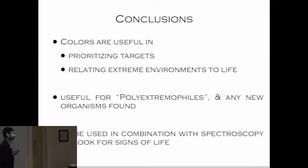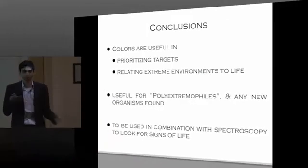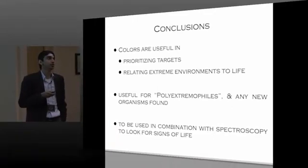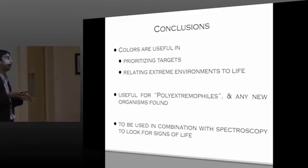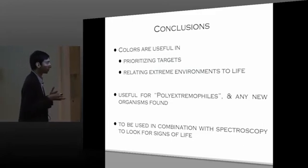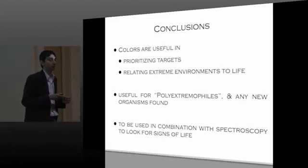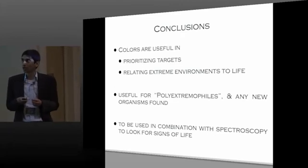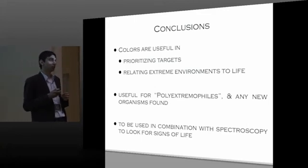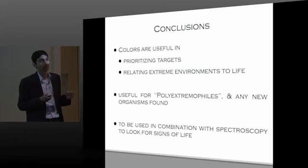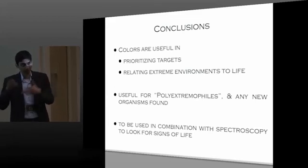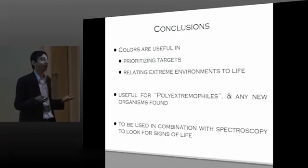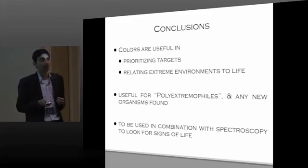And yeah, so basically, colors are useful in prioritizing targets. They help you build a link between environmental conditions and life. They can also be used, although I've used organisms which are thriving in a particular physical or chemical extreme, one can use this for poly extremophiles which can live in multiple environmental extremes or any new organisms found in new niches. The important thing to note here is that this does not tell you whether there is life or not. What it tells you is that a particular candidate or a planet is useful for following up. And therefore, spectroscopy with this method is useful for determining the overall habitability or potential habitability of the planet and also see if the planet is indeed inhabited. I think I'll stop there. Thank you.